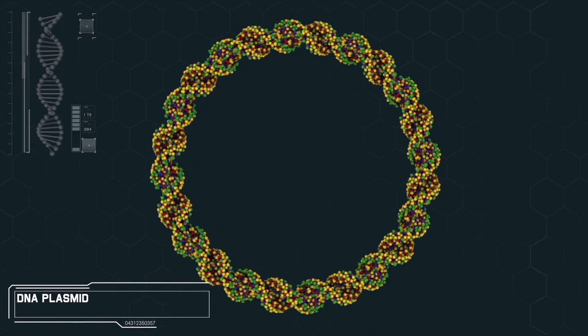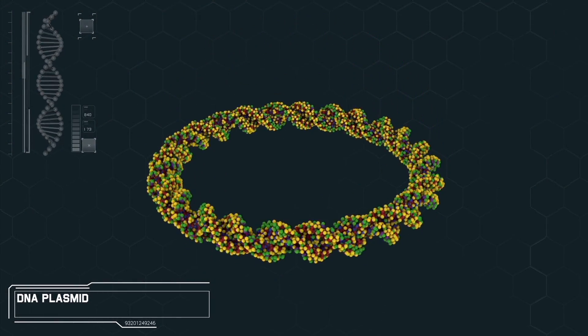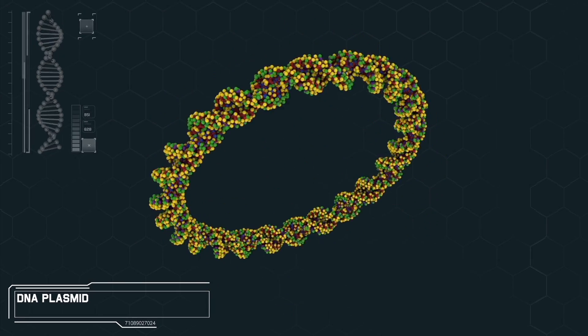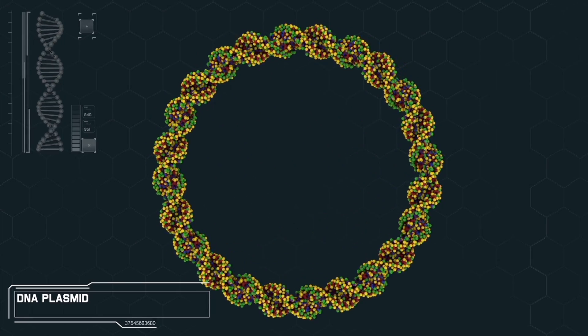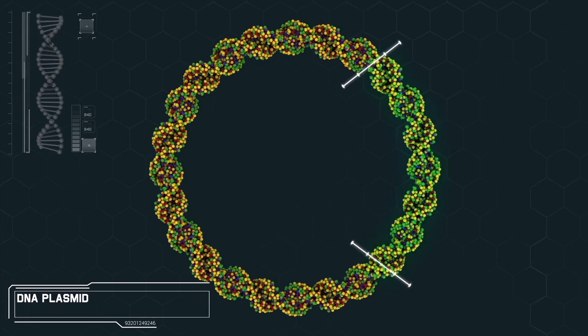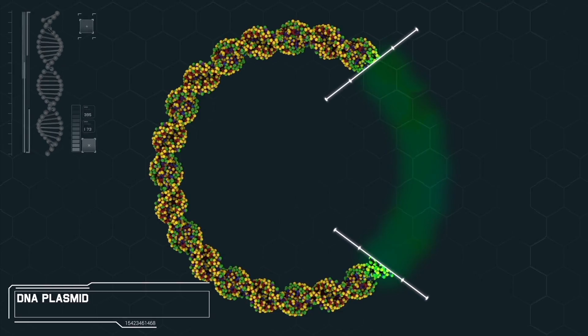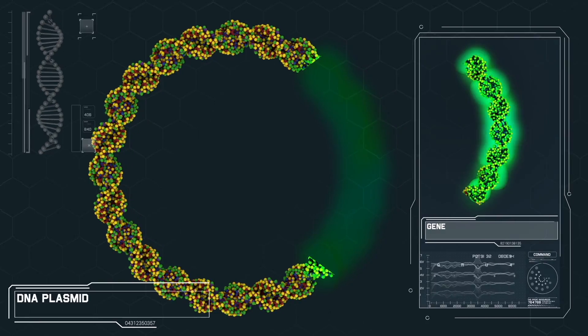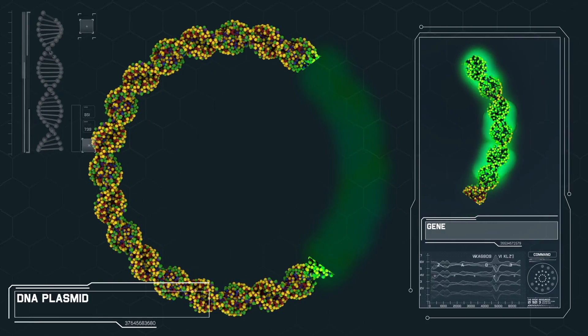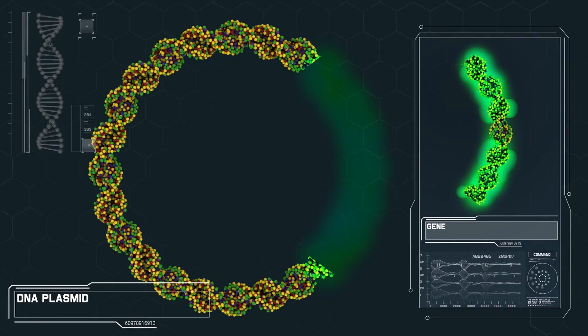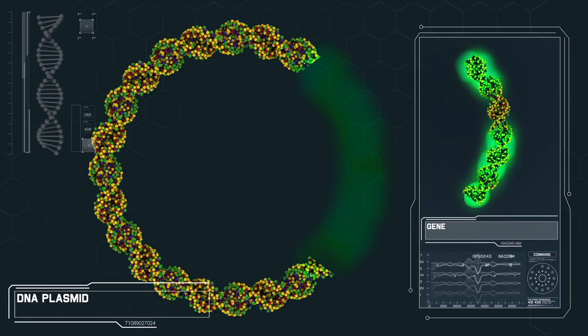We begin with a small circular piece of DNA known as an expression plasmid. Using specialized enzymes as the tools, this plasmid is cut at precise sites in order to introduce a single gene carrying a carefully coded message to the patient's immune system.